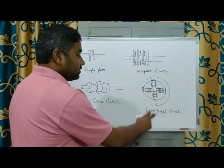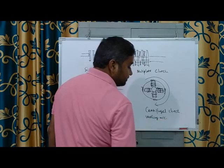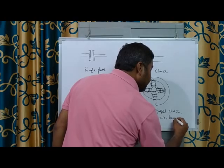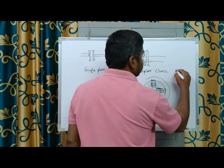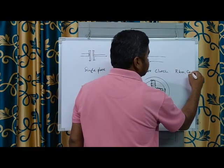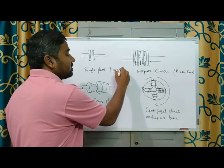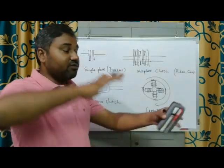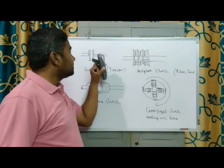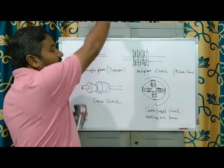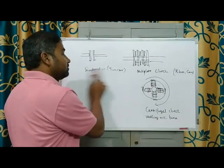Centrifugal clutches are many times used in washing machines, also in Luna, scooty, etc. Multi-plate clutches are used in bikes and cars. Single plate clutches can be used in tractors because you want a simple design but a very big one. Multi-plate clutches can be a little bit smaller, but single plate ones need to be very big — because there is only a single plate, and if it is not very big the torque transmission will not be appropriate. So this is the classification of the clutch according to the configuration.